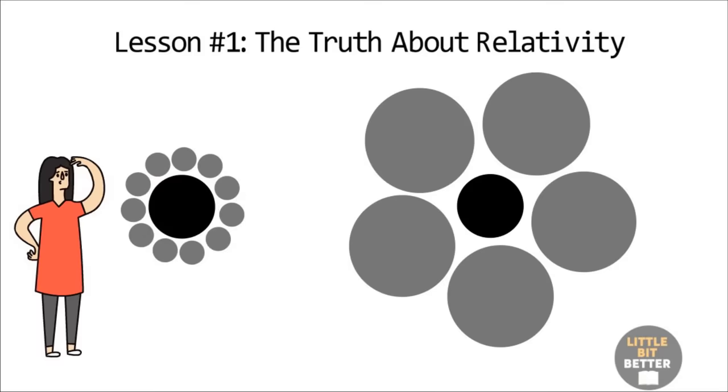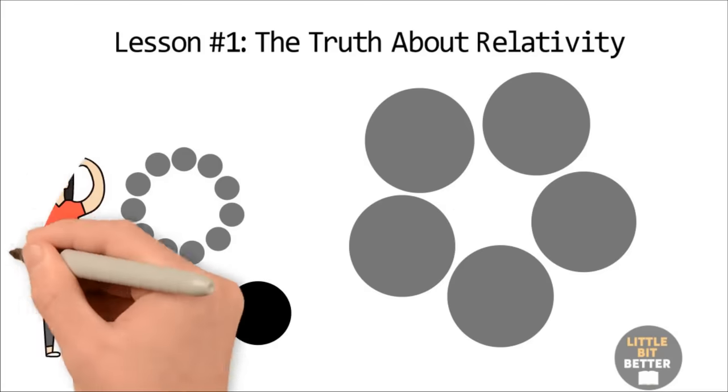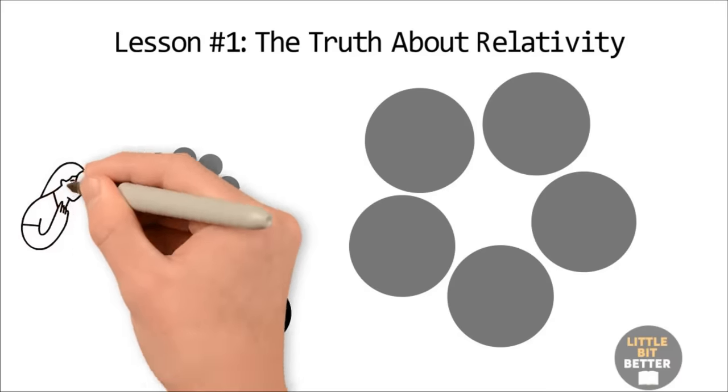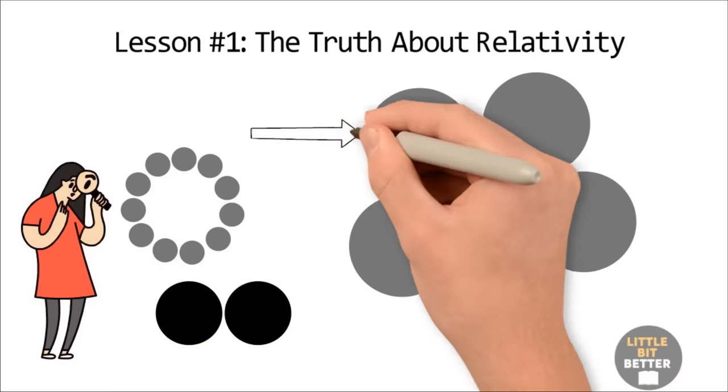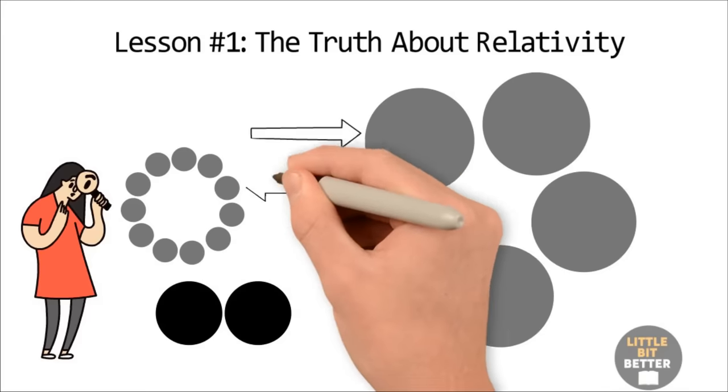For example, look at these figures for a moment. Which of the two black circles is larger? Actually, both circles are the same size, but when it is surrounded by other larger circles, it appears smaller. And when it is surrounded by smaller circles, it appears larger.